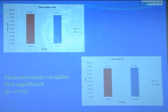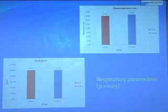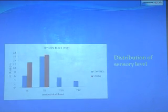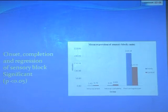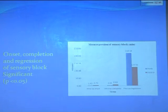Respiratory parameters showed no significant difference between the study and control groups. Regarding sensory block, we observed the distribution of sensory level and mean regression of sensory block in both groups. A significant difference was found in the onset of block: in the nalbuphine study group, onset was 1.43 minutes on average, while in the control group it was approximately 4.73 minutes.